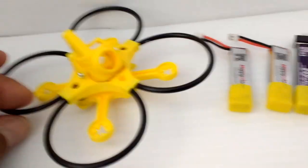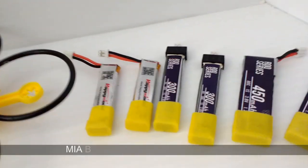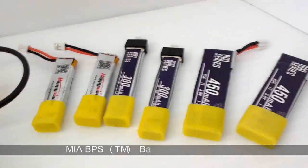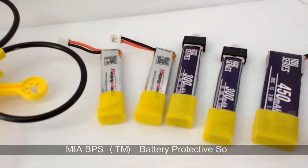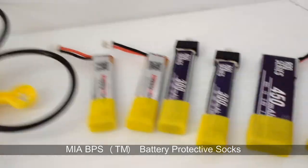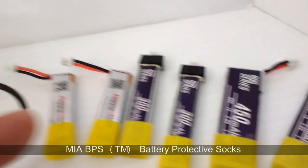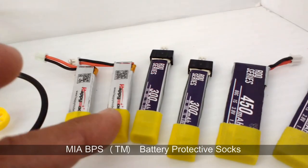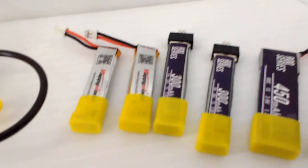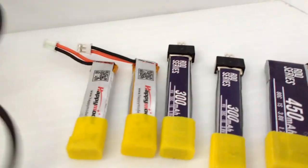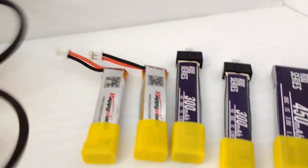To the right here we have a set of batteries with protective socks. These are called the MIA BPS, and it's a trademark of MIA Microflight. They protect the battery's front end and underneath. These protective socks only cover the front end because the rest of the battery needs to be inserted into the strap.